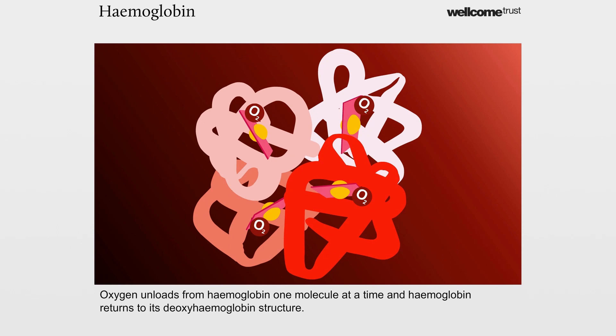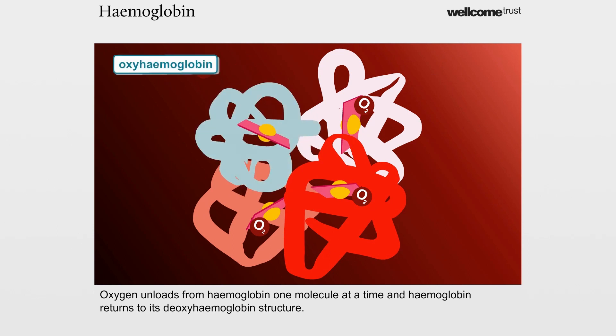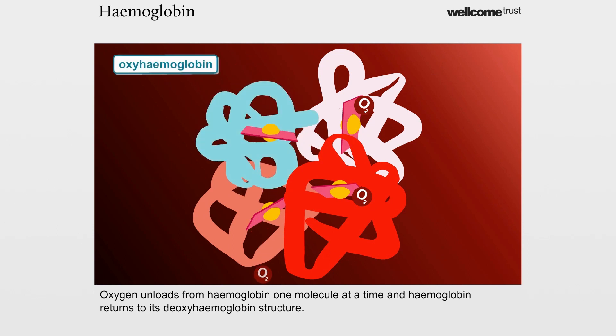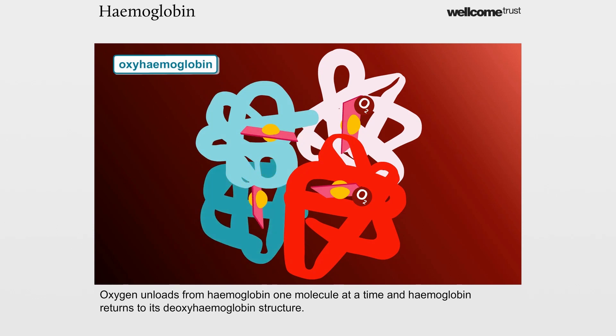Oxygen unloads from haemoglobin one molecule at a time, and haemoglobin returns to its deoxyhaemoglobin structure.